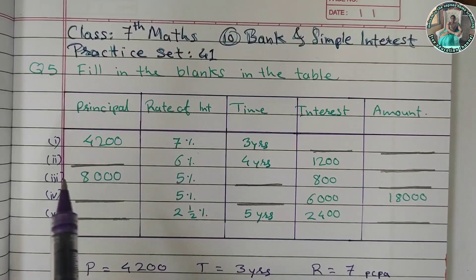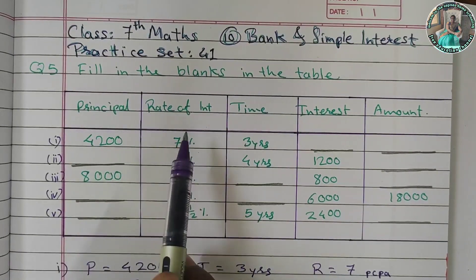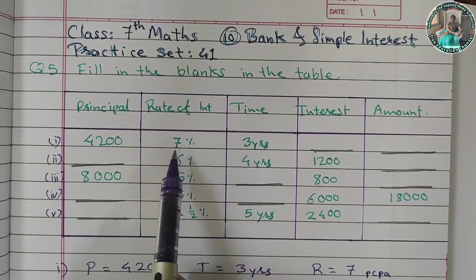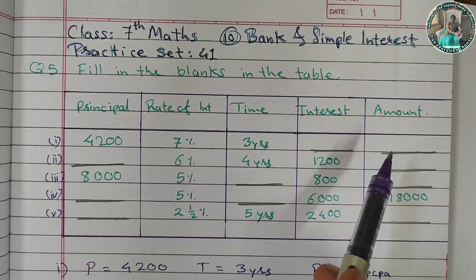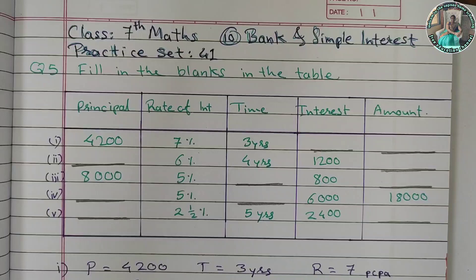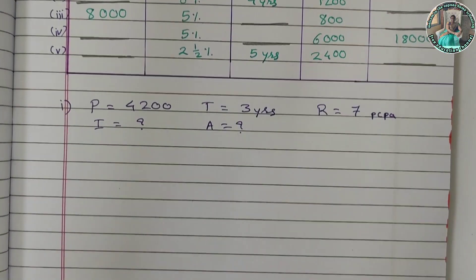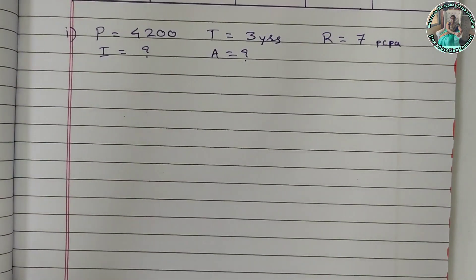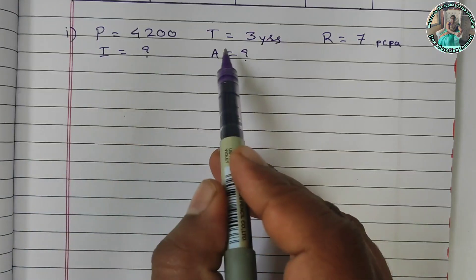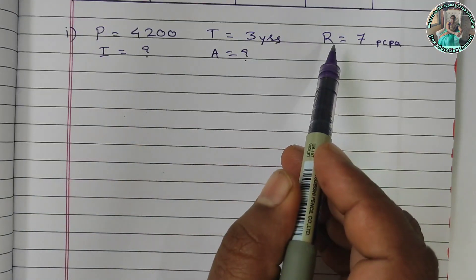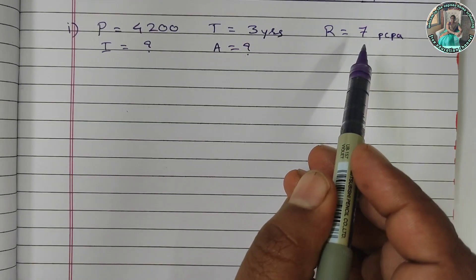The principal amount is 4,200, the rate of interest is 7%, and the time is 3 years. The interest and the amount are to be found. So we will solve it. The principal is 4,200, time is 3 years, and the rate of interest is 7% per annum.